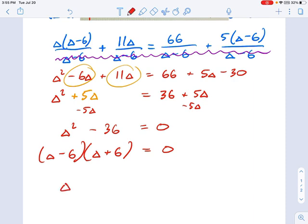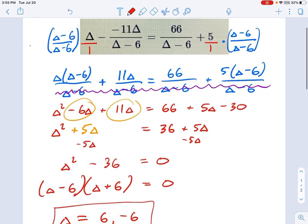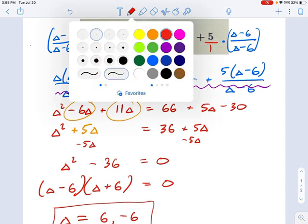Not x. Here are our two solutions. Delta equals six and negative six. Okay. Now, before you walk away from the problem, we're not done yet.